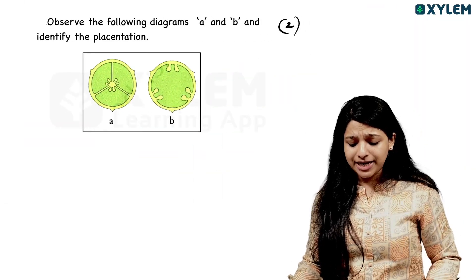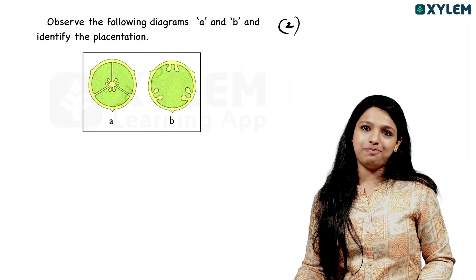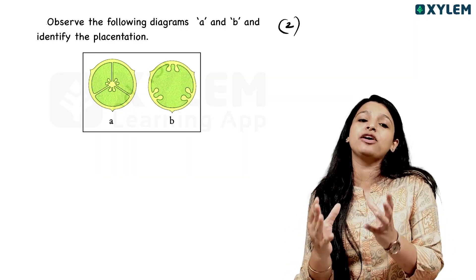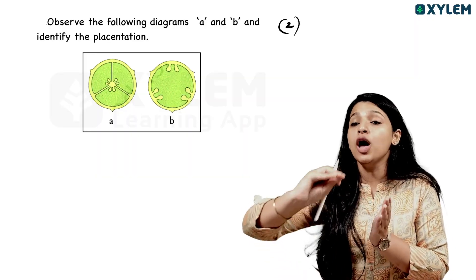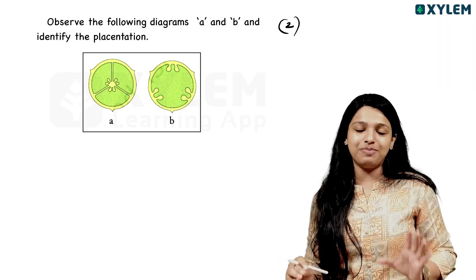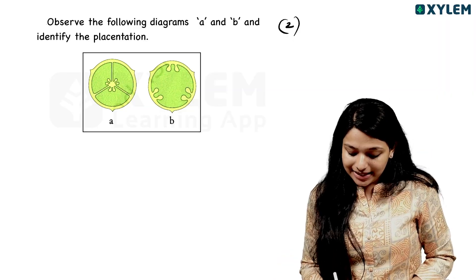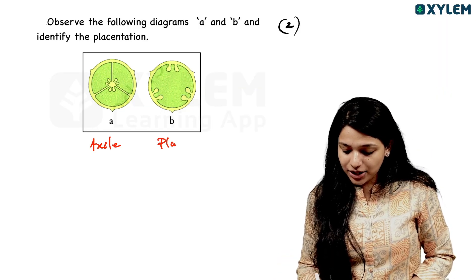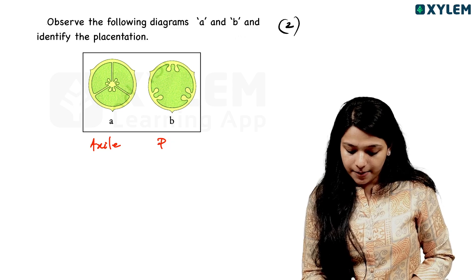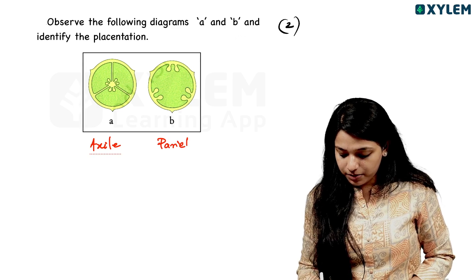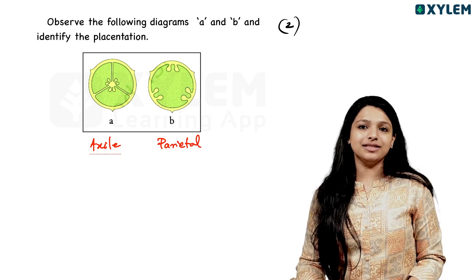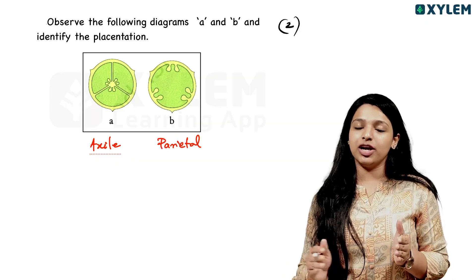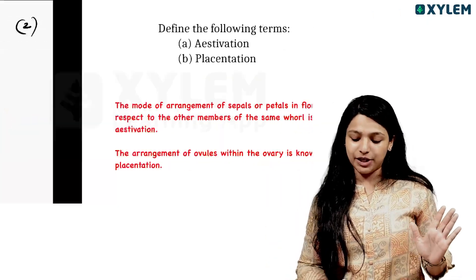Observe the following diagrams A and B and identify the placentation. Placentation is the arrangement of ovules in the ovary. Diagram A is Axile placentation, diagram B is Parietal placentation. Other types include Marginal and Basal placentation.